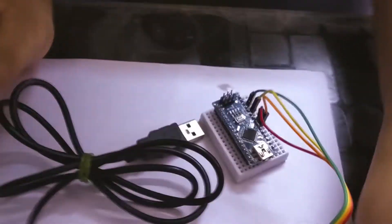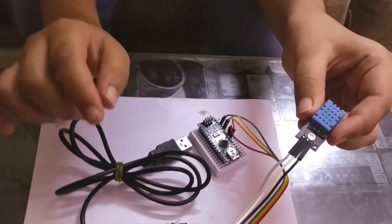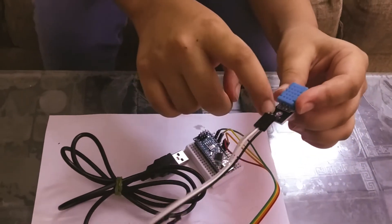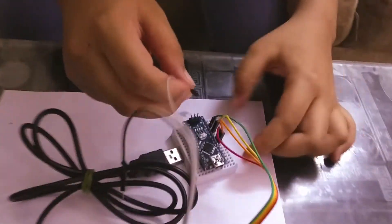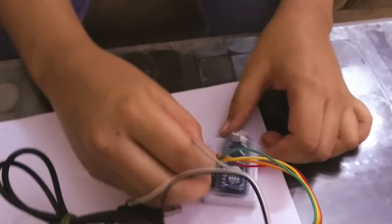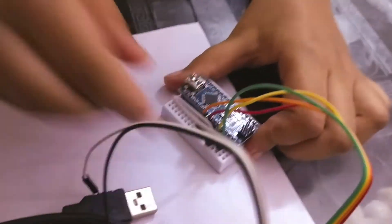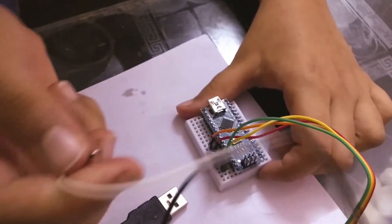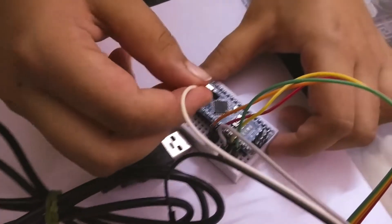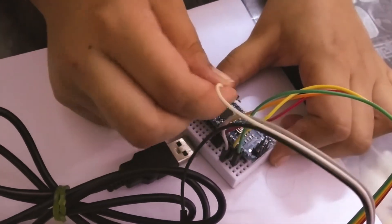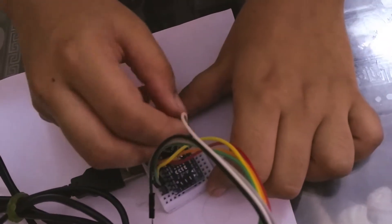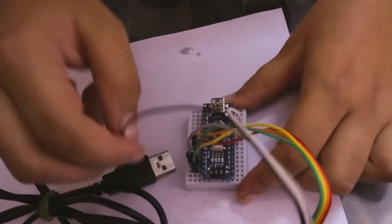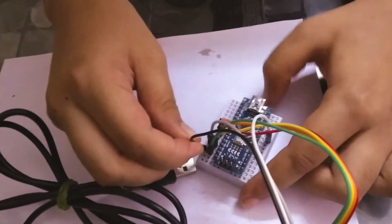Now we take the DHT11 temperature and humidity sensor. The positive goes in the 5V. We'll just keep it behind like this. Then the middle pin goes in the D7, then the negative pin goes in the GND.